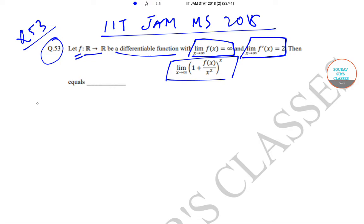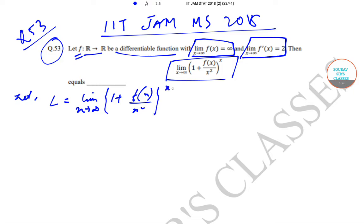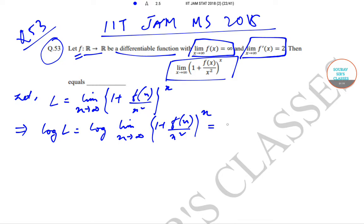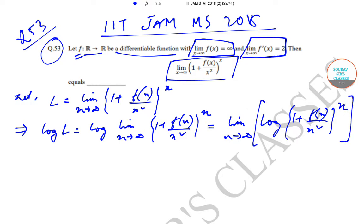Let us first assume that L equals the limit as x tends to infinity of (1 + f(x)/x²)^x. Taking the log, log L equals the log of that limit, which comes down to the limit as x tends to infinity of x·log(1 + f(x)/x²).